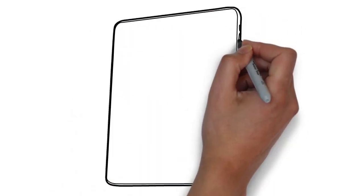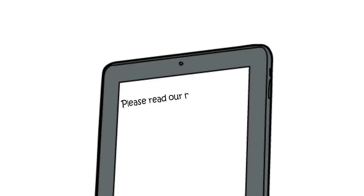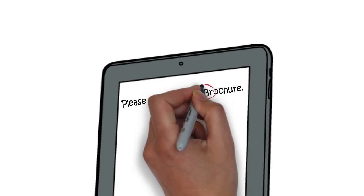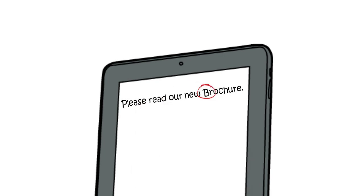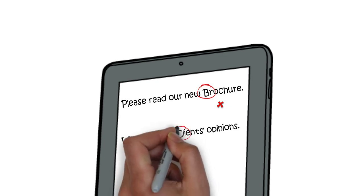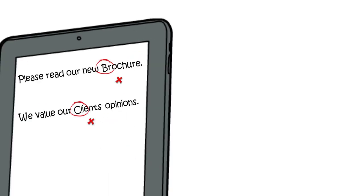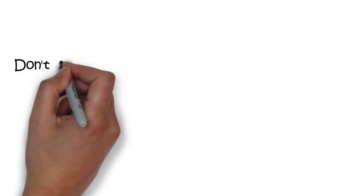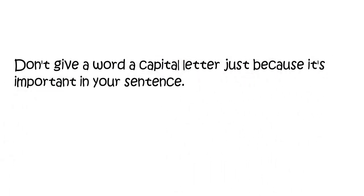Here's a common mistake that people make. When they have an important word in their sentence, like 'brochure' in this sentence, then they give it a capital letter. Actually, that's wrong — it's a common noun. 'We value our client's opinion' — a very important word in the sentence, but it doesn't get a capital letter. So the ruling is: don't give a word a capital letter just because it's an important word in your sentence.